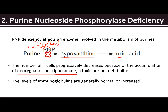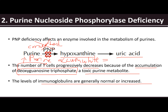This leads to a decreased number of T cells due to the accumulation of deoxyguanosine triphosphate, a toxic purine metabolite. Due to purine not being converted into hypoxanthine, it accumulates and secretes this toxic metabolite which causes the number of T cells to decrease. The levels of immunoglobulins are generally normal or increased.